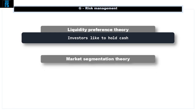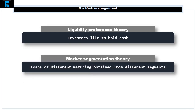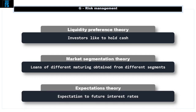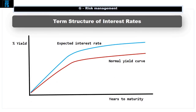2. Market segmentation theory explains that loans of different maturity are obtained from different segments of the market with different expectations. This explains why the graph is a curve rather than a straight line. 3. Expectations theory reflects expectations as to future interest rates. This reflects the angle or slope of the line. For example, a steep sloping curve would indicate an expectation that rates will rise.